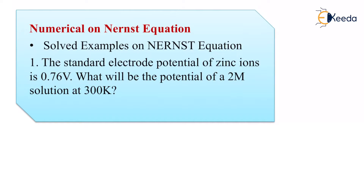Let us see some solved examples with respect to the Nernst equation. The first problem: the standard electrode potential of zinc ions is -0.76 volts. What will be the potential of a 2 molar solution at 300 K? So we have been given: standard electrode potential of zinc = -0.76 V, concentration = 2 molar, and temperature = 300 K.